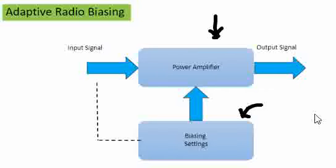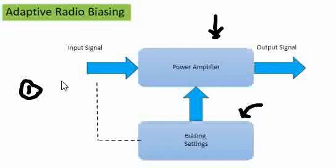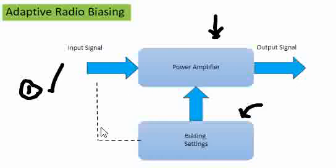To adjust the bias settings as per the power requirements, the first thing we need to know is what is the input power being provided to the power amplifier — that means we need to know the input signal requirement. That should be fed to the bias circuit, and correspondingly the biasing will set the power amplifier.